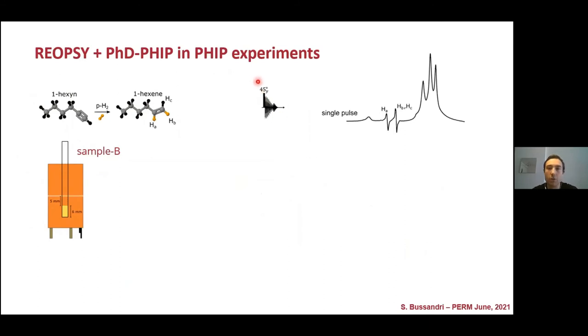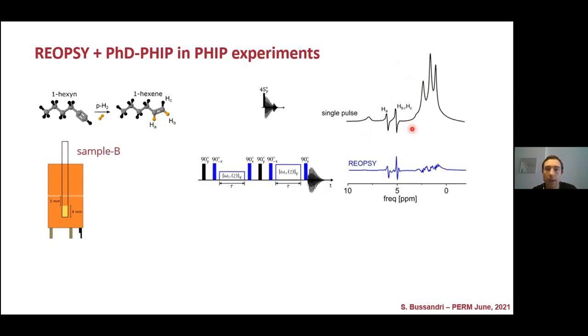First, we performed a 45 degree pulse, single pulse to see the degree of hyperpolarization that we obtained in this particular setup. Then we tested the RE-OPSY sequence by itself. You can see that we filter out almost all the thermal signal, leaving the hyperpolarization signal untouched.